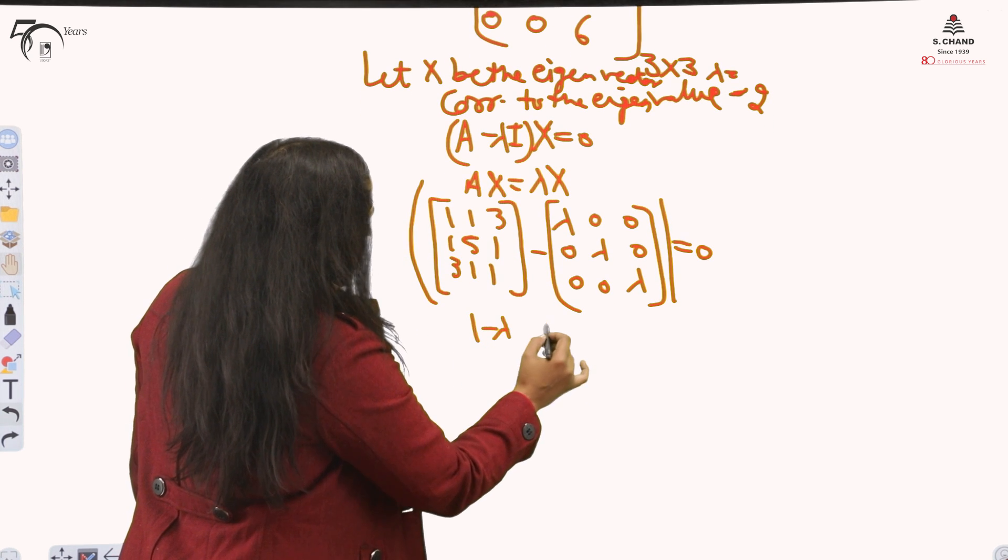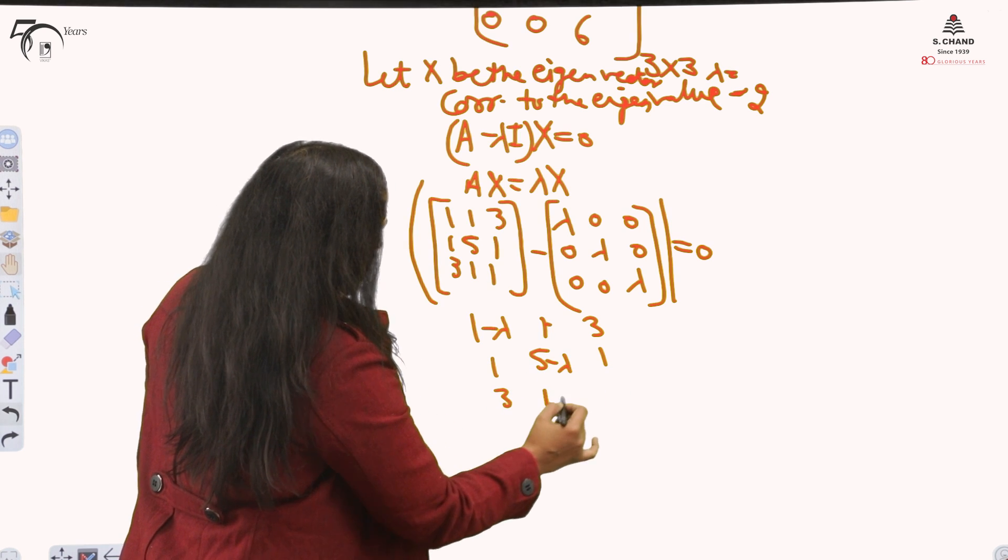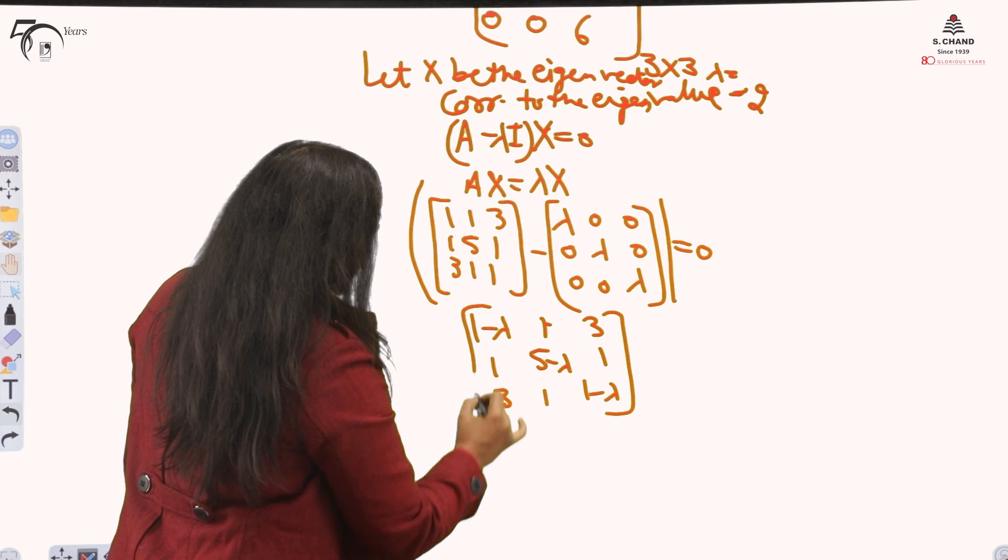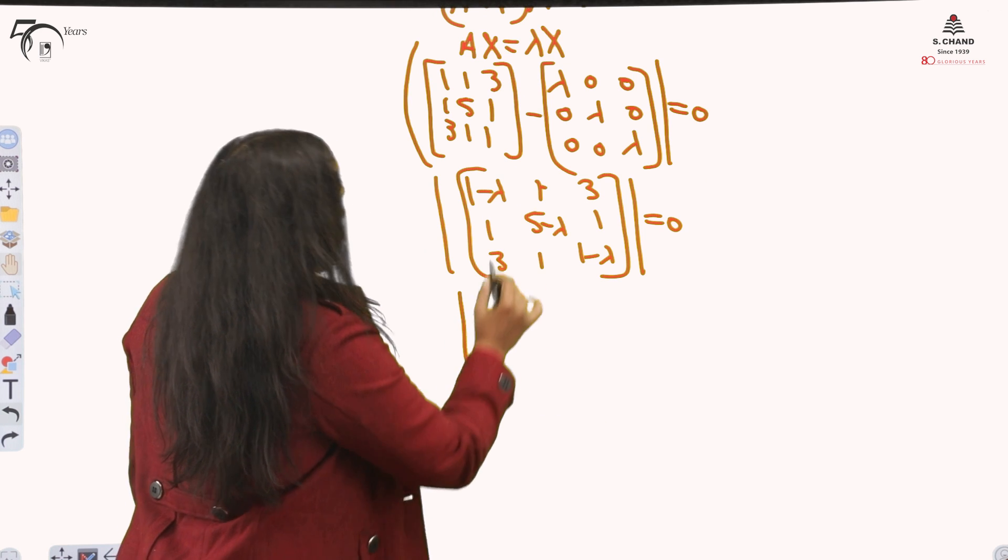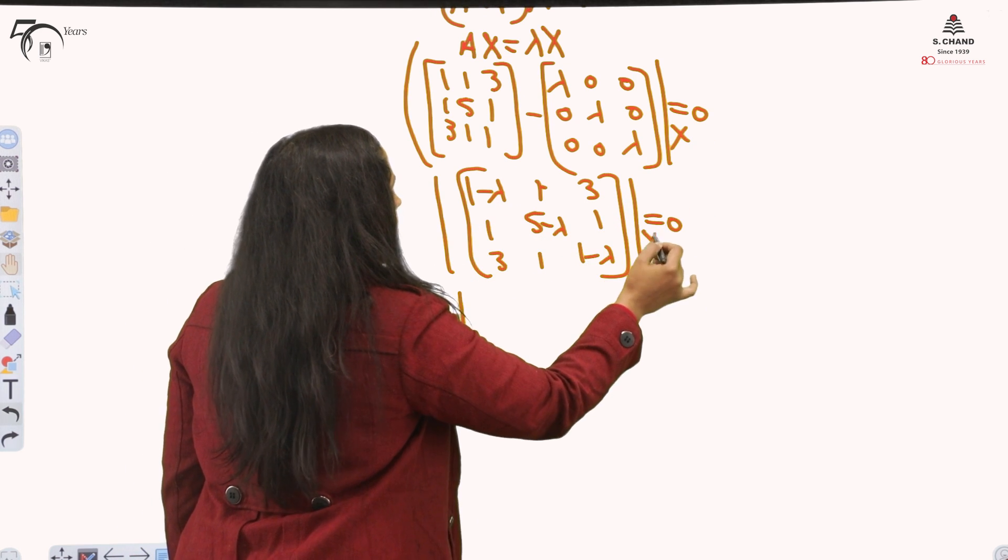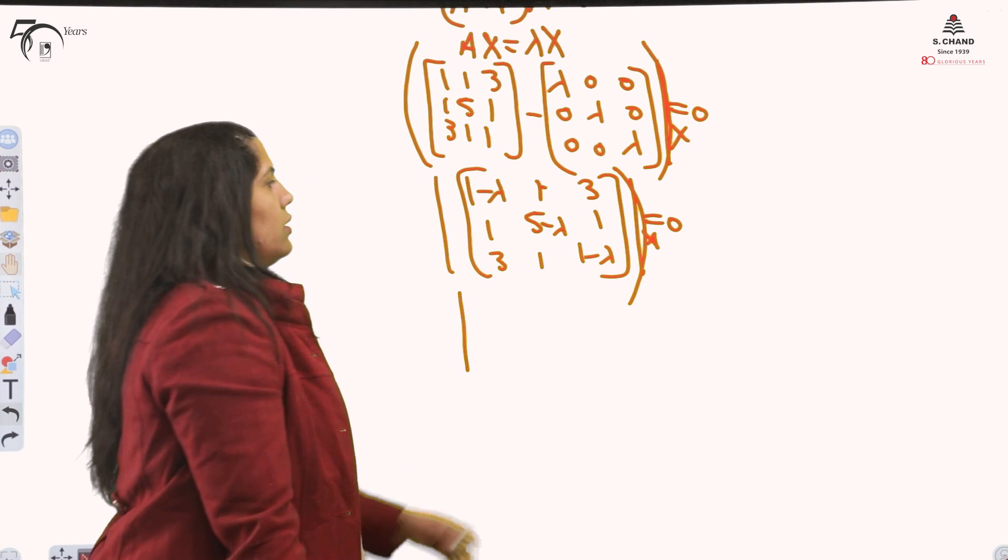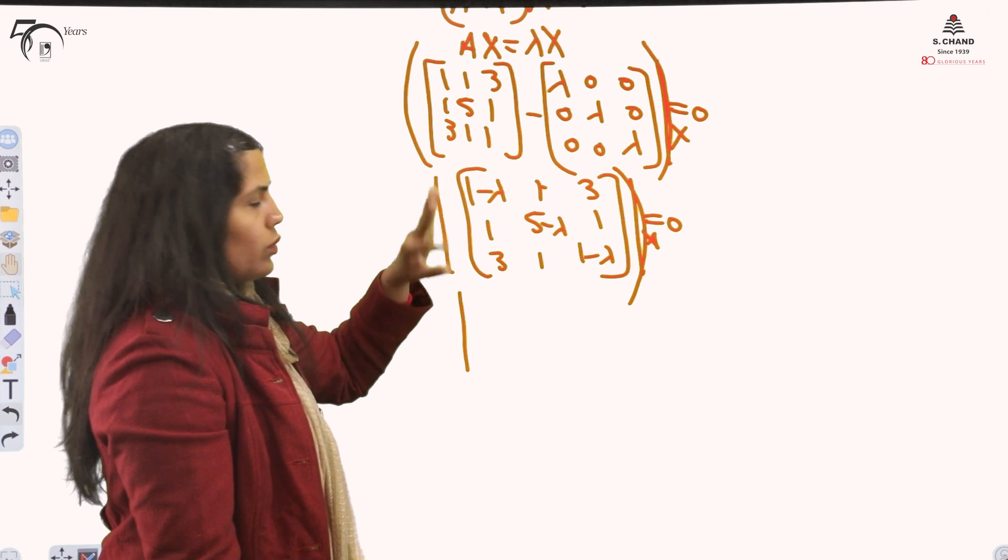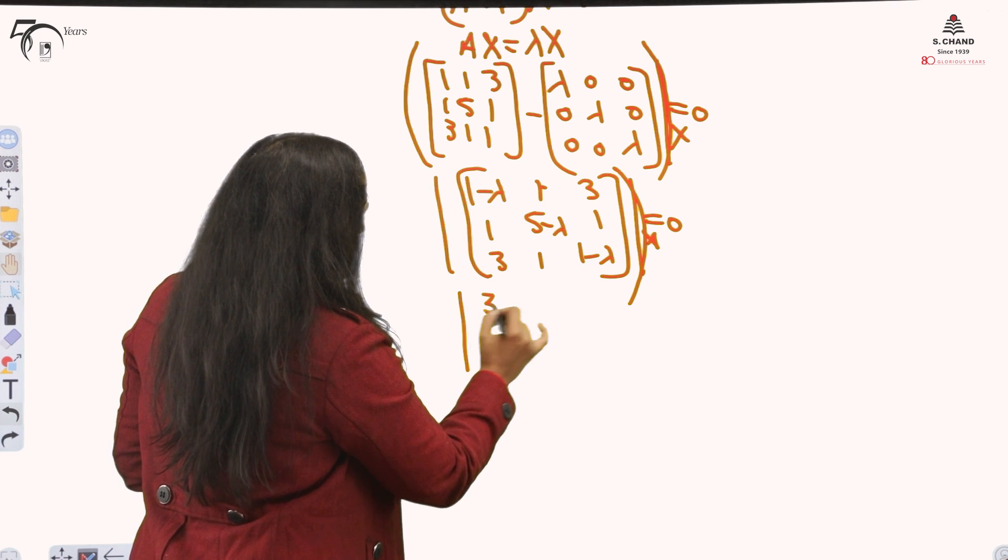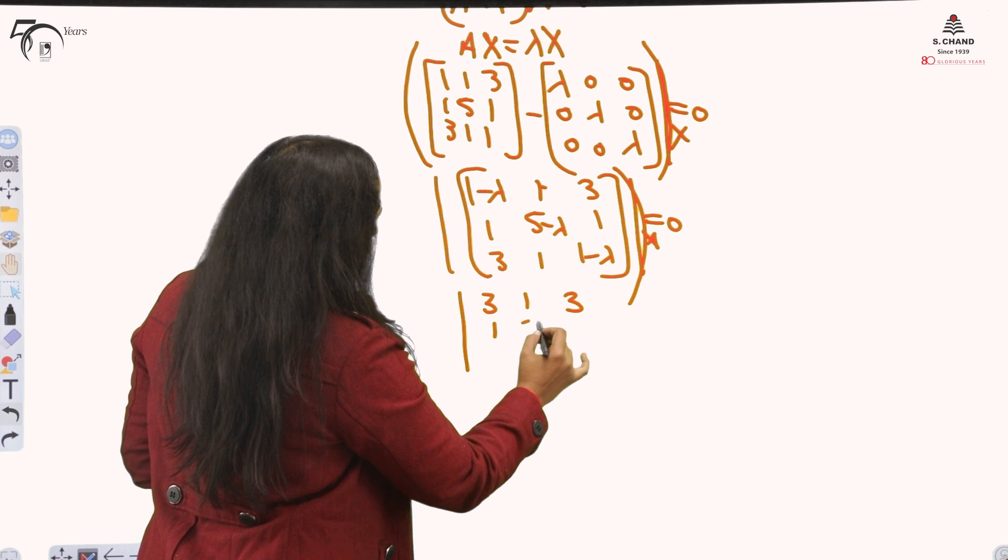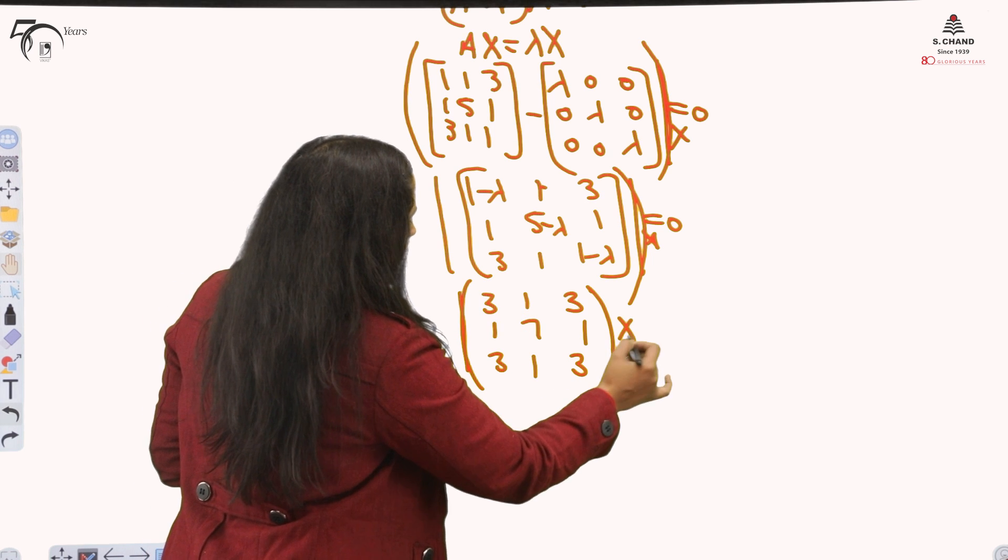After subtracting, my main equation is 1 minus lambda, 1, 3, 1, 5 minus lambda, 1, 3, 1, 1 minus lambda equal to 0. Put the value minus 2 now. When you substitute lambda equals minus 2, it will become plus. So 3, 1, 3, 1, 7, 1, 3, 1, 3. This is the matrix and x equals 0.